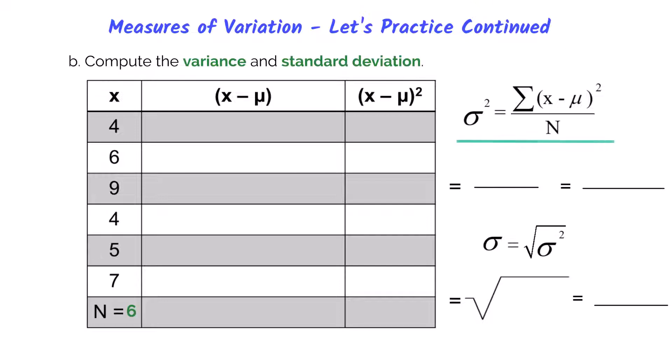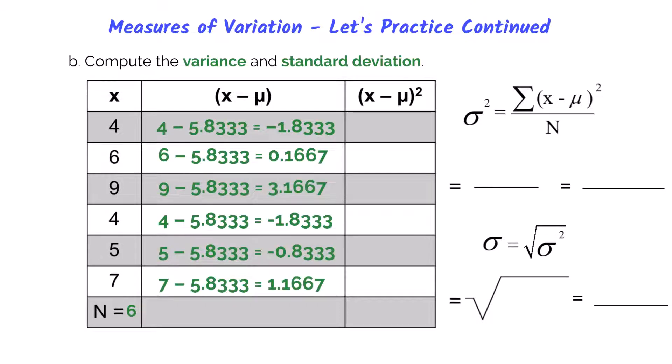So now using our formula right here, it's going to ask us to work through the order of operations inside the parentheses. First, we will take each of our x's and subtract it from our average or our mean that we calculated previously. The first executive had four flights last month. So we're going to subtract the average number of flights or 5.8333. And we get negative 1.8333.